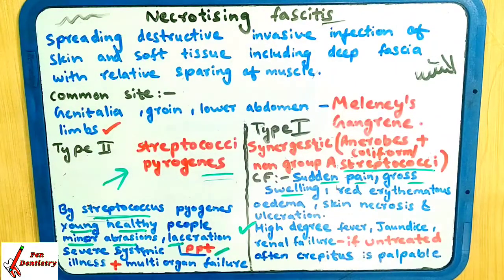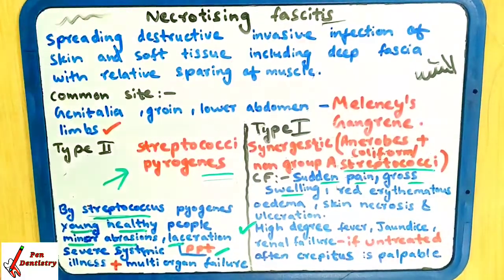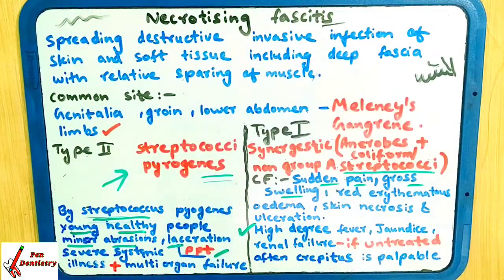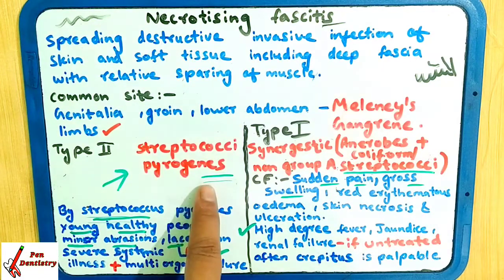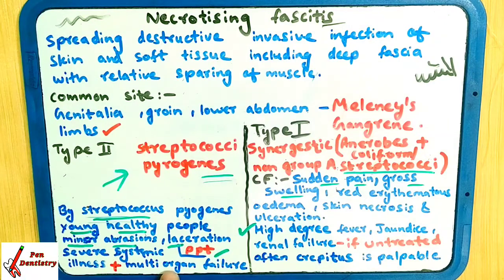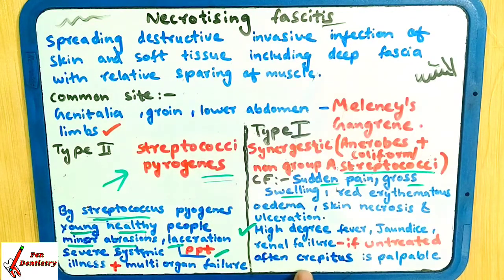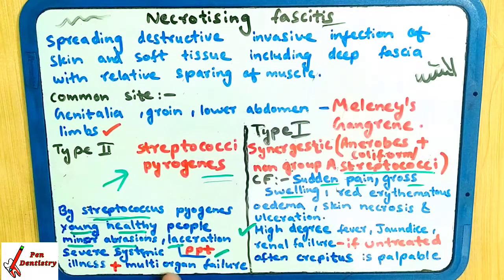Crepitus is palpable — crepitus means when your tissue rubs, it can be felt on palpation; this is a feature of Type 1. Type 2 is more difficult to cure, and mostly in these cases the patient dies due to multiple organ failure. When all organs stop functioning, the patient ultimately dies. In Type 1, there are no precipitating factors.